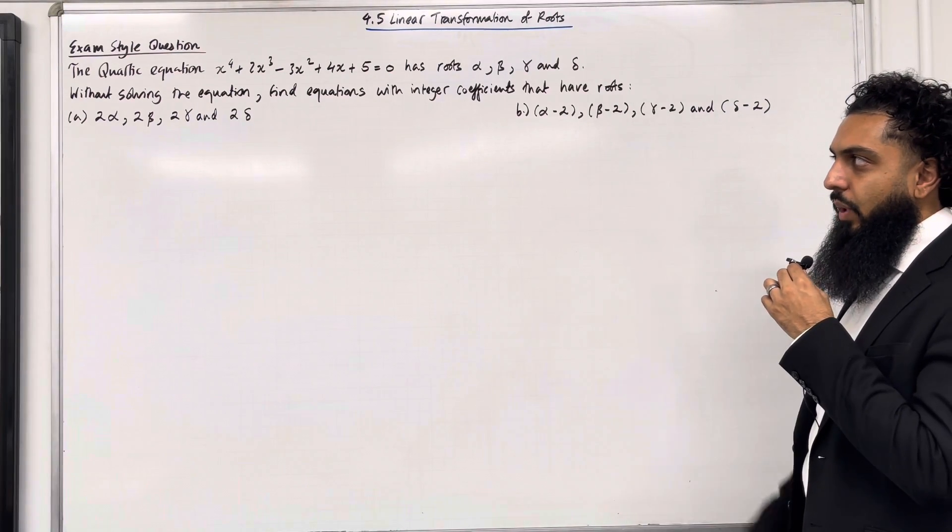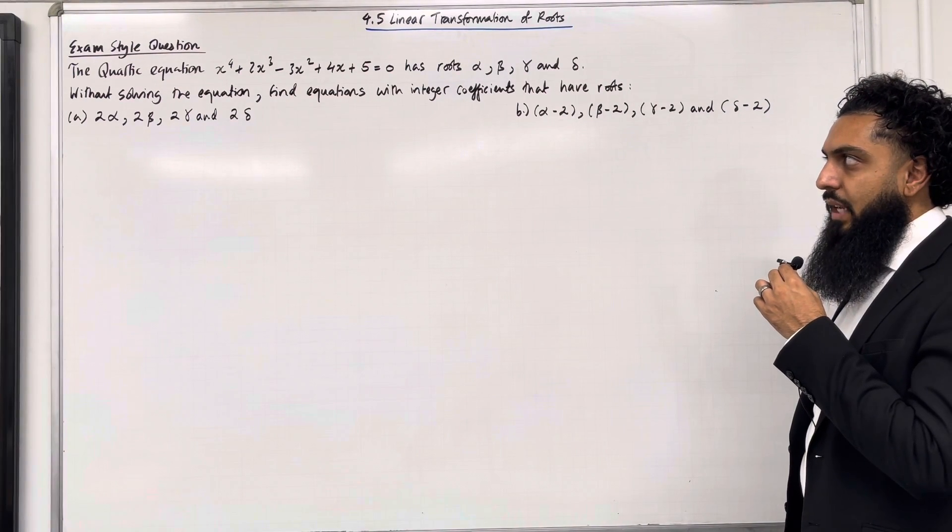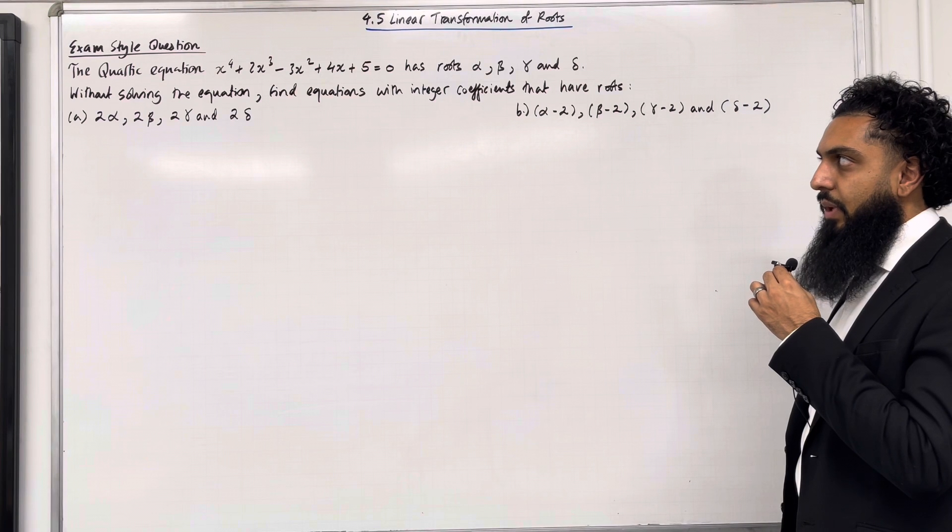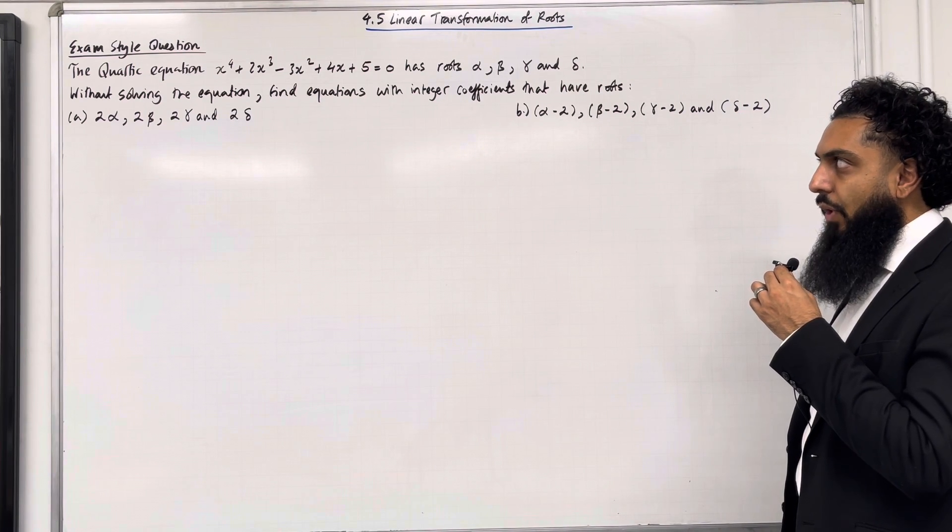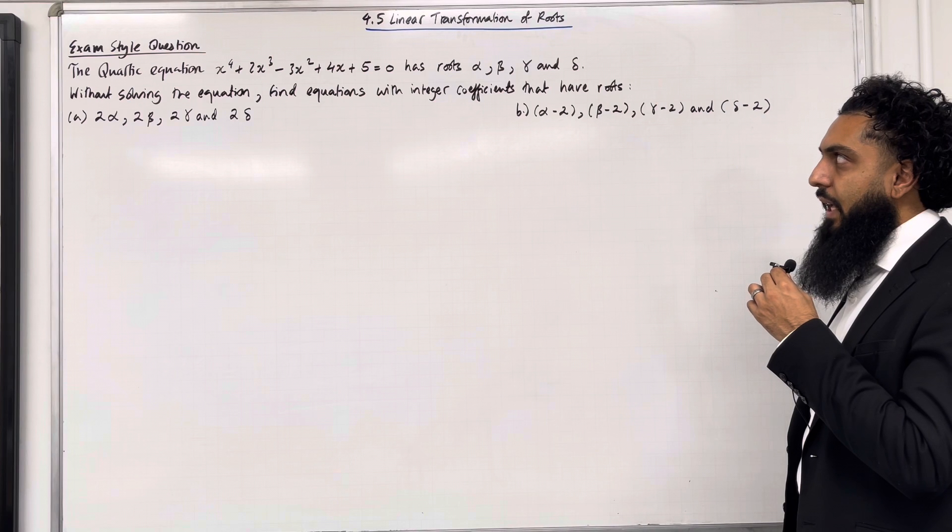Let's have a look at this exam style question. The quartic equation x⁴ + 2x³ - 3x² + 4x + 5 = 0 has roots α, β, γ and δ.